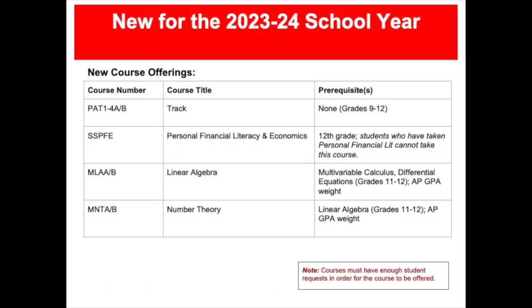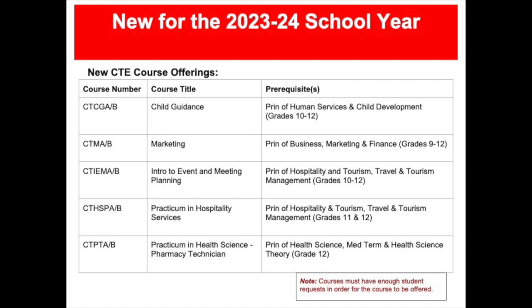New course offerings for the 2023-2024 school year include track, personal financial literacy and economics, linear algebra, and number theory. The prerequisites are listed to the right of the courses. In addition, new CTE course offerings include child guidance, marketing, intro to event and meeting planning, practicum in hospitality services, and practicum in health science pharmacy technician. Please note that courses must have enough student requests in order for the course to be offered.